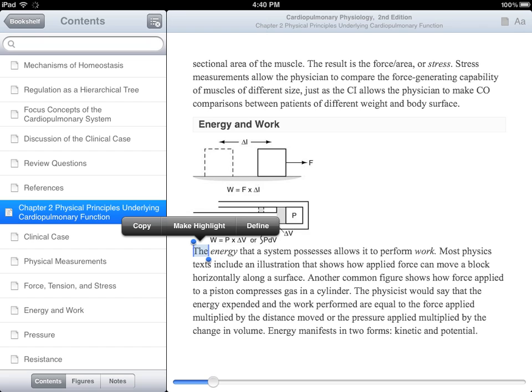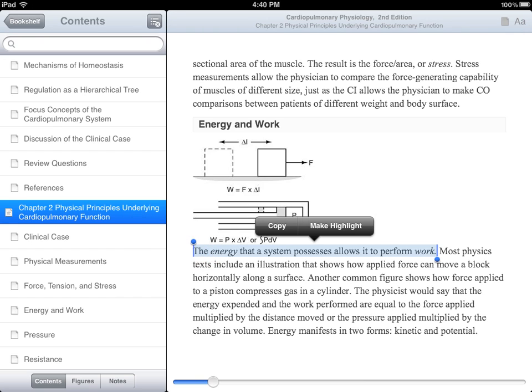Two blue circles will appear, one at the beginning of the word and one at the end of the word. Using your finger, tap on a blue circle to move the end of the passage until all words that you would like to highlight are within the circles. Then tap the Make Highlight button. The segment of text will then be highlighted.